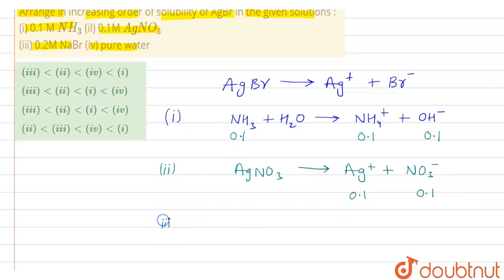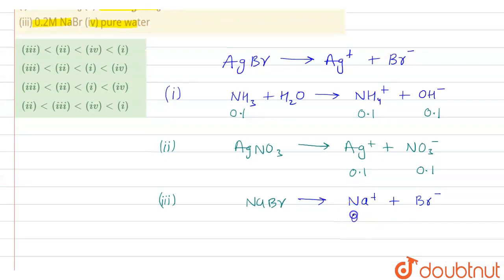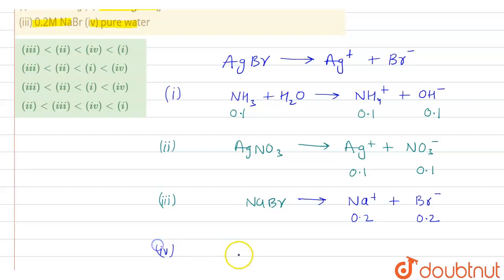In the third option we have NaBr. When NaBr dissociates into its ion form it will give Na⁺ along with Br⁻ ions, and the concentration will be 0.2 for both Na⁺ and Br⁻.